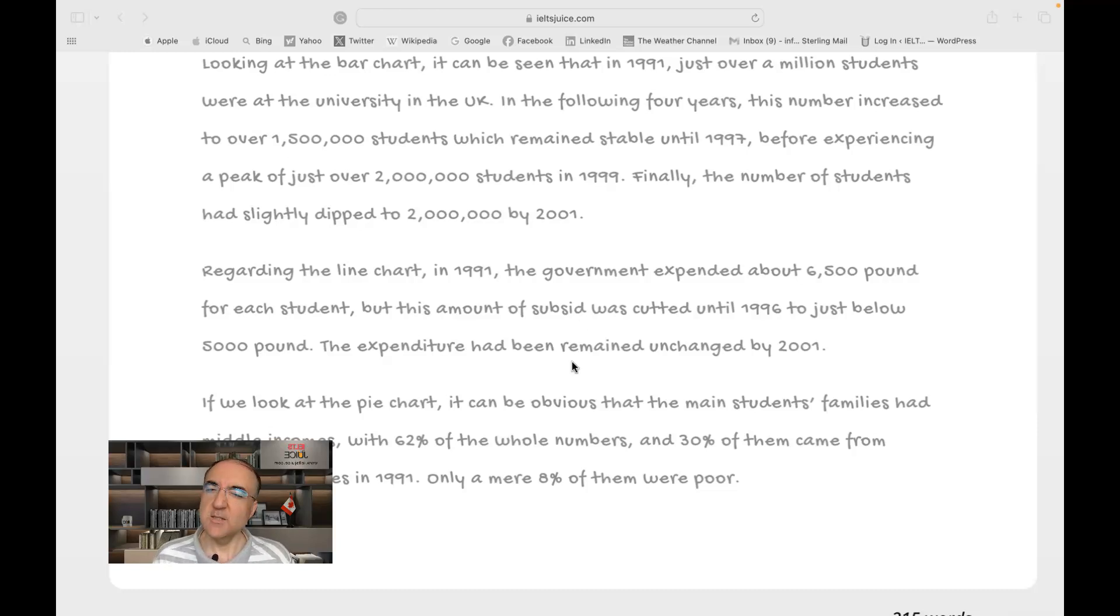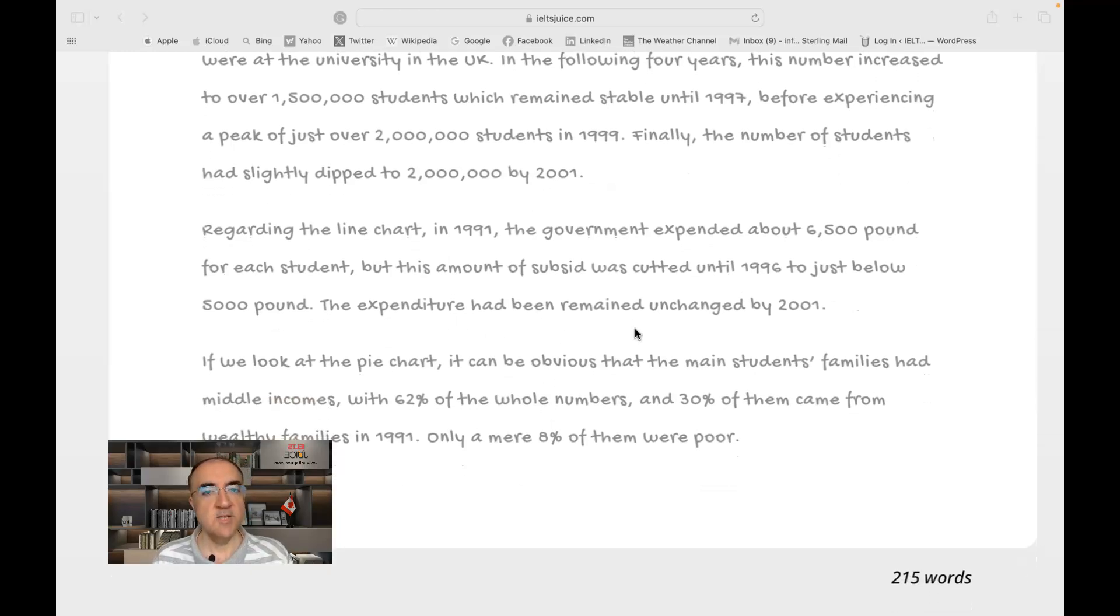Was cut, the past simple form. All three forms of the verb cut is cut, cut, cut. So it was cut until 1996 to just below 5,000 pounds. The expenditure, again, another not very accurate use of past perfect tense. And the verb remain is an intransitive verb. It means you don't need an object here. And because of that, you cannot use it in a passive voice. So the expenditure remained unchanged, past simple and an active voice.